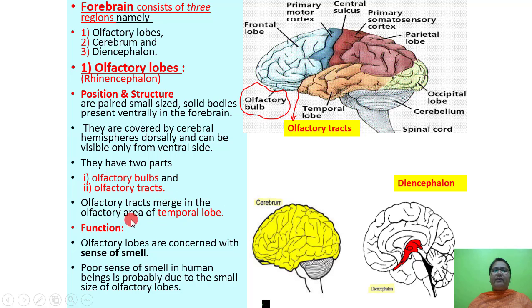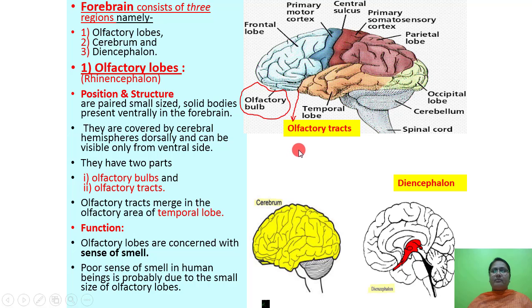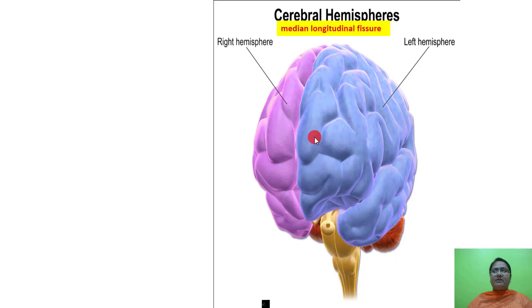Olfactory tracts merge into the olfactory area of the temporal lobe. The function of olfactory lobes is that they are concerned with the sense of smell. Poor sense of smell in human beings is probably due to the small size of the olfactory lobe.